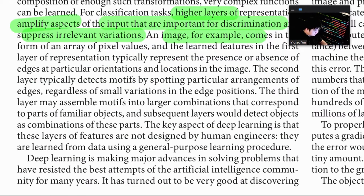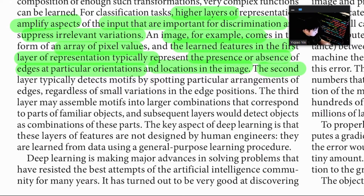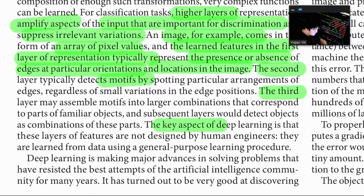An image, for example, comes in the form of an array of pixel values. The learned features in the first layer of representation typically represent the presence or absence of edges at particular orientations and locations. The second layer typically detects motifs by spotting particular arrangements of edges, regardless of small variations in edge positions. The third layer may assemble motifs into larger combinations corresponding to parts of familiar objects, and subsequent layers will detect objects as combinations of these parts. The key aspect of deep learning is that these layers of features are not designed by human engineers — they are learned from data using a general purpose learning procedure.